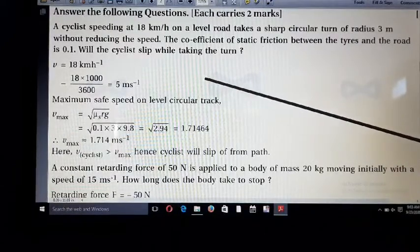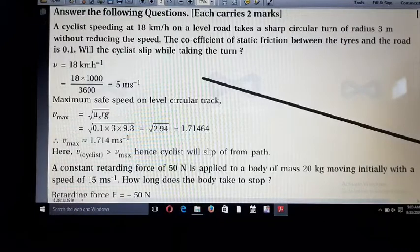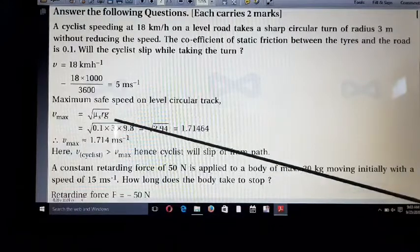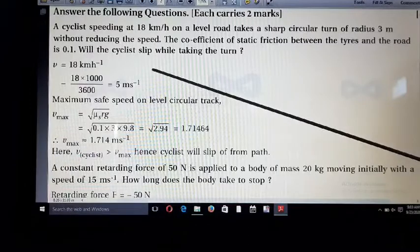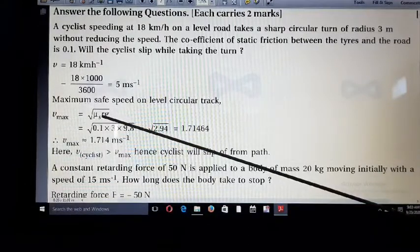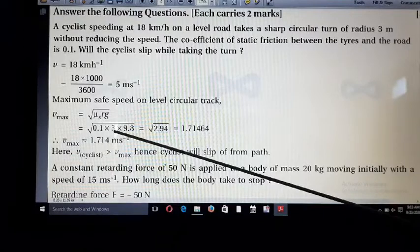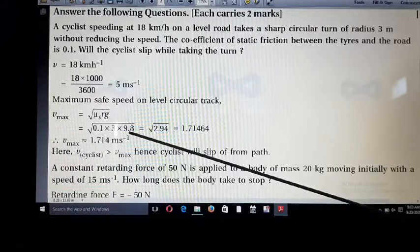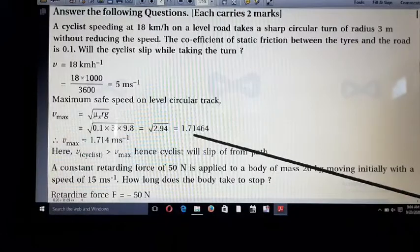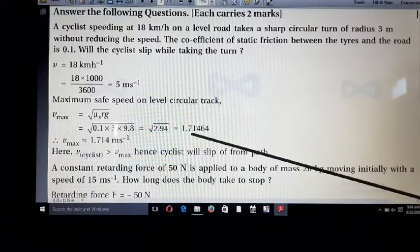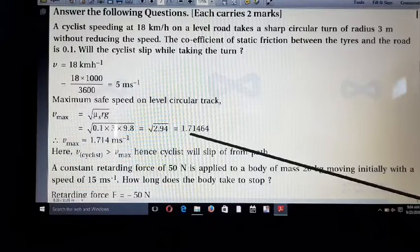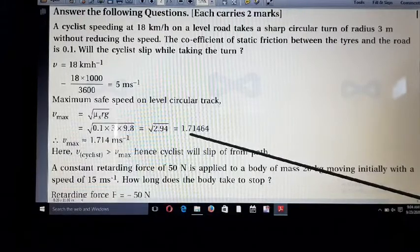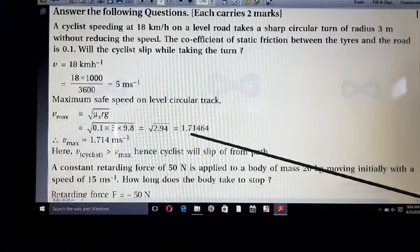And last video, we proved that the maximum safe speed for the circular track is V_max = sqrt(μs·R·g). Where μs is coefficient of static friction, its value is 0.1. R is radius, 3 meter. G is gravitational acceleration, 9.8. All these values substitute, calculate and we get answer 1.71 meter per second. This is the maximum speed. More than this speed, cyclists slip while taking the turn.